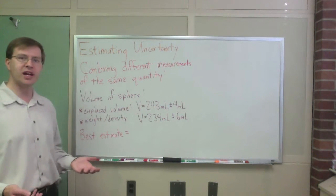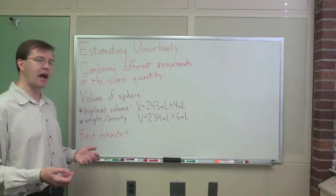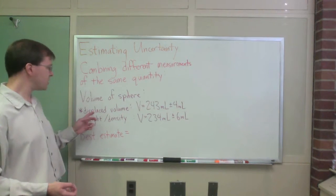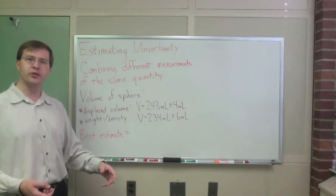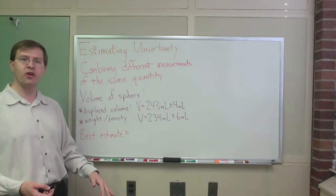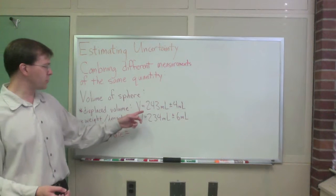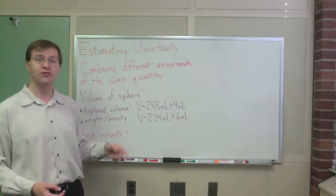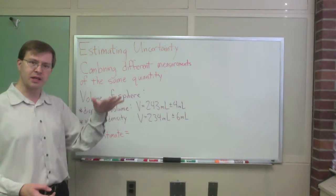So for example, imagine I have a small metal sphere and I've tried to measure its volume in two different ways. First, I dunked it under water in a graduated cylinder and measured how much volume was displaced and we saw there were 243 milliliters, plus or minus 4 milliliters, that were displaced. That was my uncertainty there.